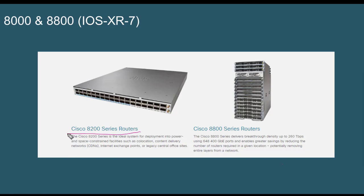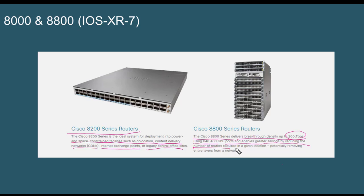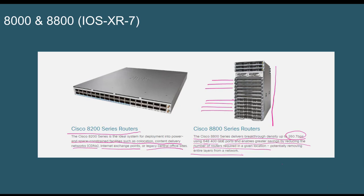Let's quickly look at the 8000 and 8800 series. The 8200 series are small 1U routers, very powerful, leveraging 100 gigabit connectivity for small exchanges and CDN networks where space is constrained. The 8800 series is a different beast — with a capacity of 260 terabits per second, it's multi-modular, supporting 400 GigE and 100 GigE modules, ideal for CDN networks requiring high bandwidth and port density, running IOS XR 7.